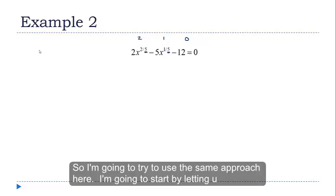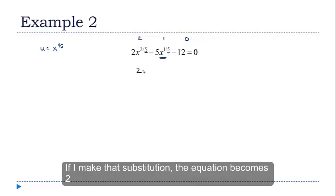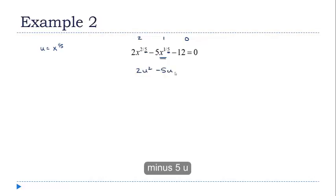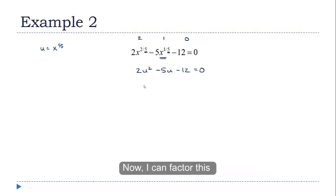I'm going to start by letting u equal x to the 1 fifth, basing that on the middle term. And if I make that substitution, the equation becomes 2u squared minus 5u minus 12 equals 0, which is just a quadratic equation. Now I can factor this and set those factors equal to 0.